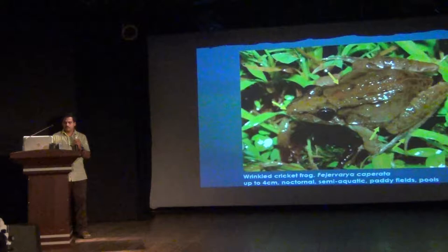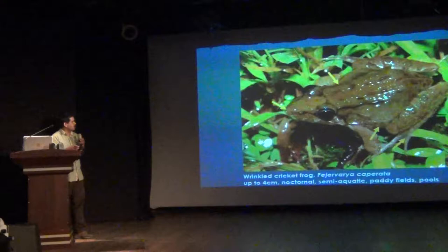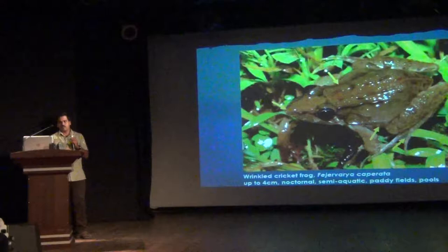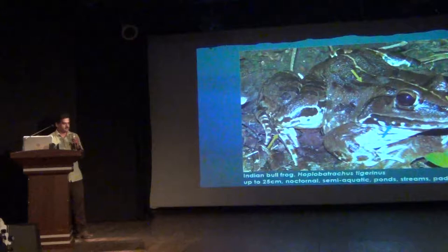Next is the common cricket frog — again, one of the commonest frogs in Bangalore, which you can see and hear easily. Look at the snout, which is V-shaped and pointed. There are glandular folds on the skin — that is the unique character — and there is small webbing. There are also femoral variant lines on the stomach: when you invert the frog, you see two lines, which is why they belong to the Fejervarya genus.